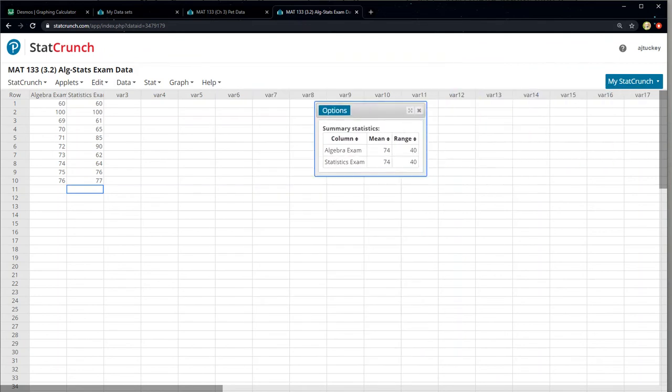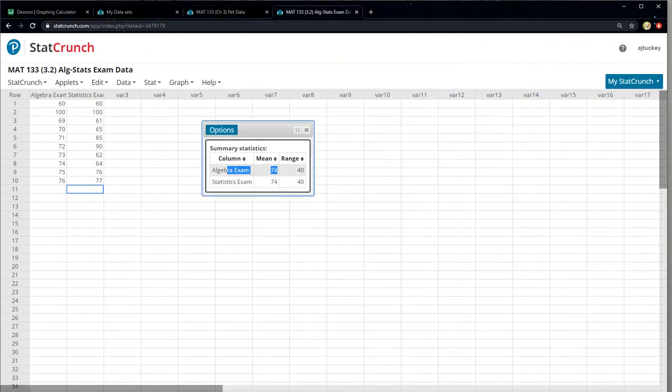So I click compute. And there you have it. Algebra exam, just like I said, was 74 and 40. Oh, look at that. The statistics exam is also 74 and 40. Interesting.